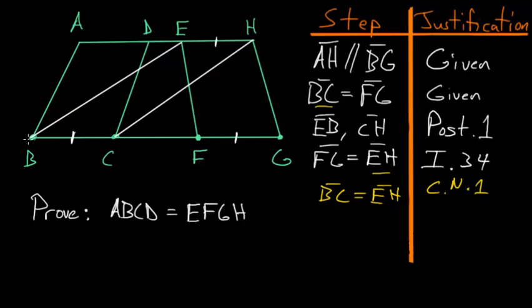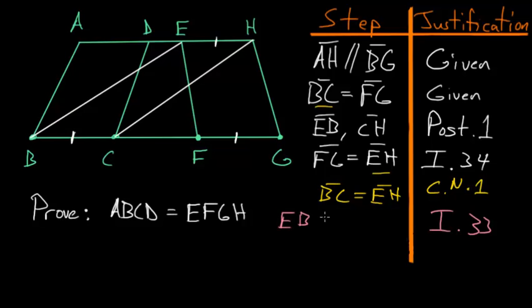From here, let's take a look at this four-sided shape EBCH. Since we know that EH and BC are equal and also parallel to each other, we know due to Book 1, Proposition 33 that this four-sided shape would be a parallelogram. So EBCH is a parallelogram.